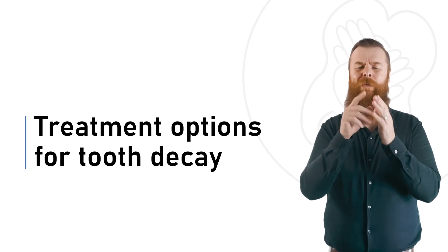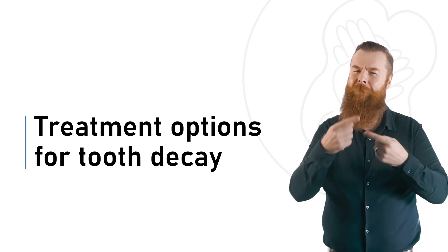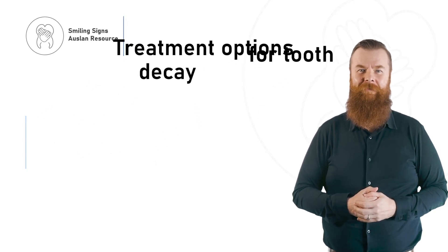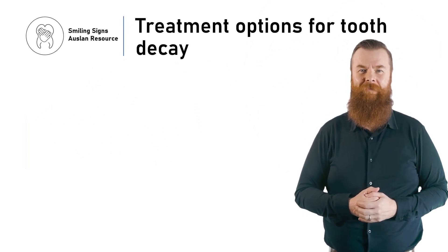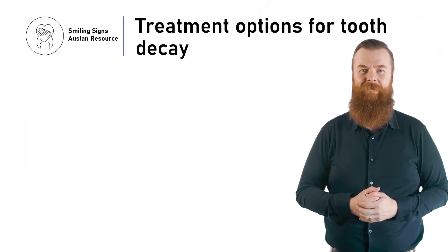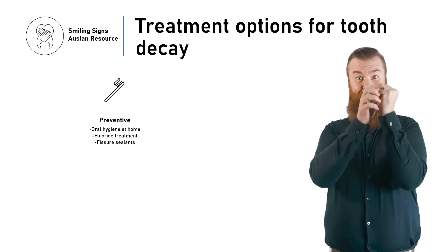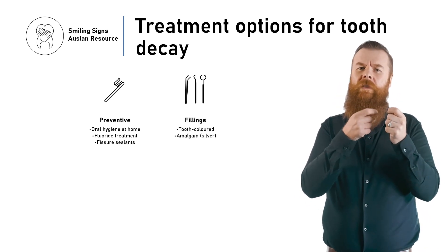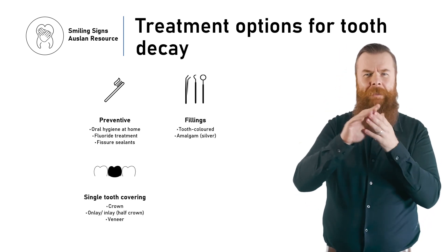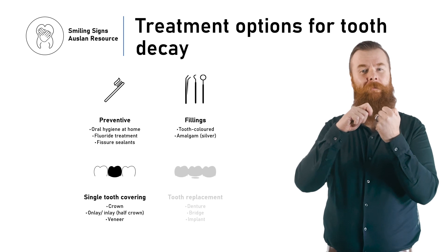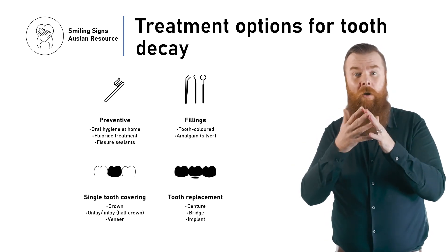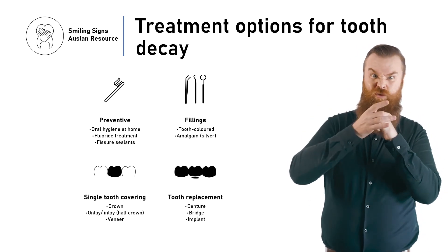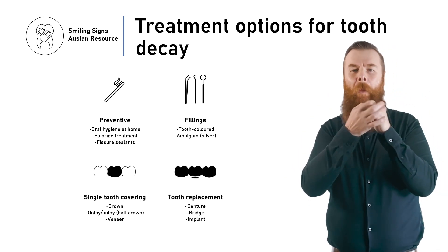Next, we will discuss ways that tooth decay can be treated. The treatment of tooth decay depends on how much decay is present. Tooth decay can be prevented by brushing, flossing and eating a low sugar diet.